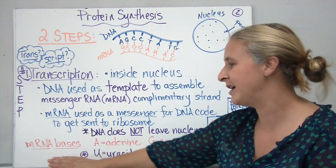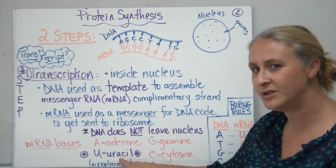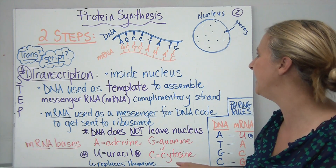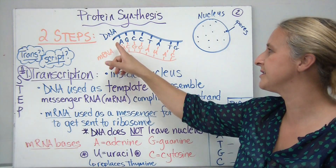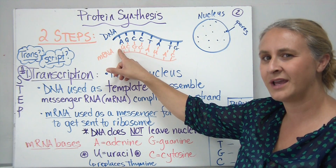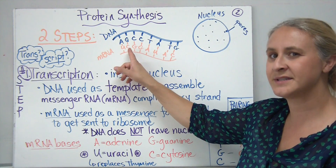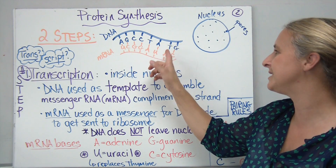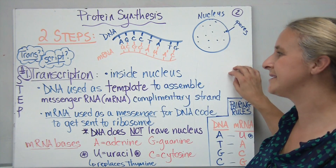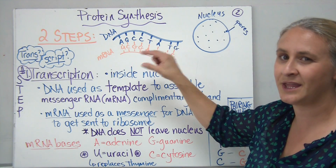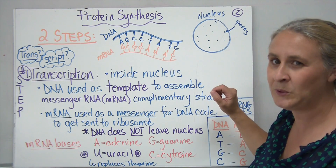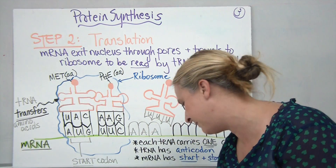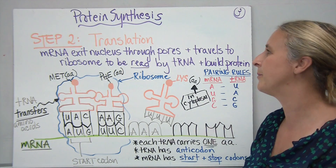The messenger RNA bases are: A for adenine, U for uracil (which replaces thymine), G for guanine, and C for cytosine — just like in DNA. So we build a complementary strand: if the DNA had an A, our messenger RNA has a U; DNA G pairs with mRNA C; DNA C with mRNA G; DNA T with mRNA A. Once we've written down the code from the DNA, that messenger RNA travels through the pores of the nucleus to the next step. We don't want the DNA to leave the nucleus because it could get damaged, which is why we make the messenger RNA.